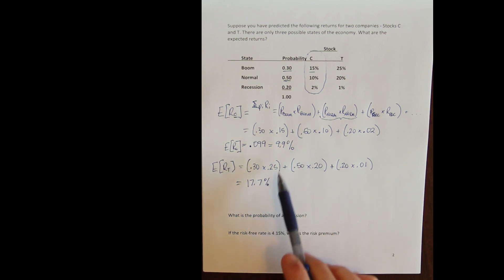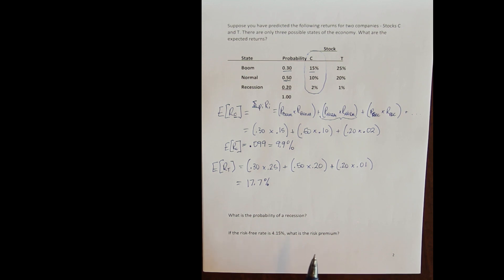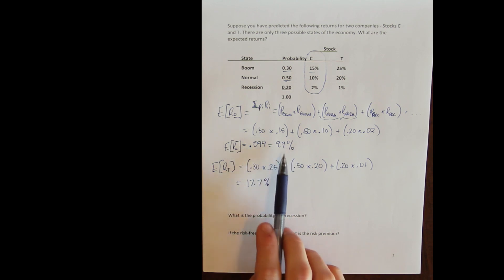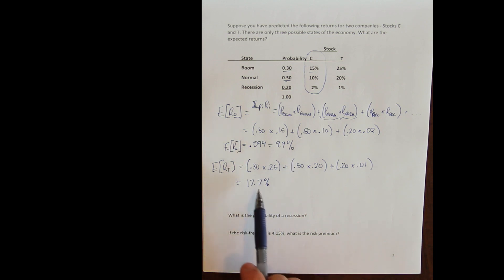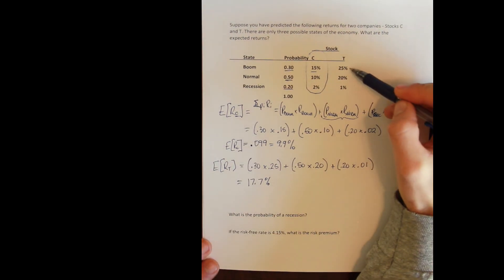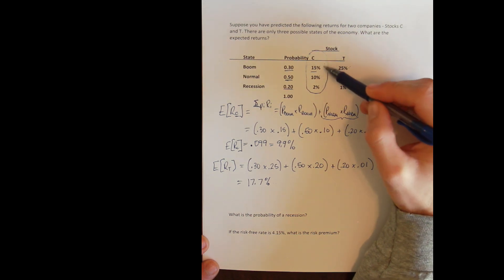Just because Stock T has a larger expected return than Stock C does not necessarily mean that Stock T is a better investment. All it means is that it has a higher expected return. Based on the fundamental rule of finance — that risk and return trade off one for one — a stock with a larger expected return also has larger risk. We can see the spread in returns is larger for T, so we can't characterize an asset without knowing both its risk and its return.